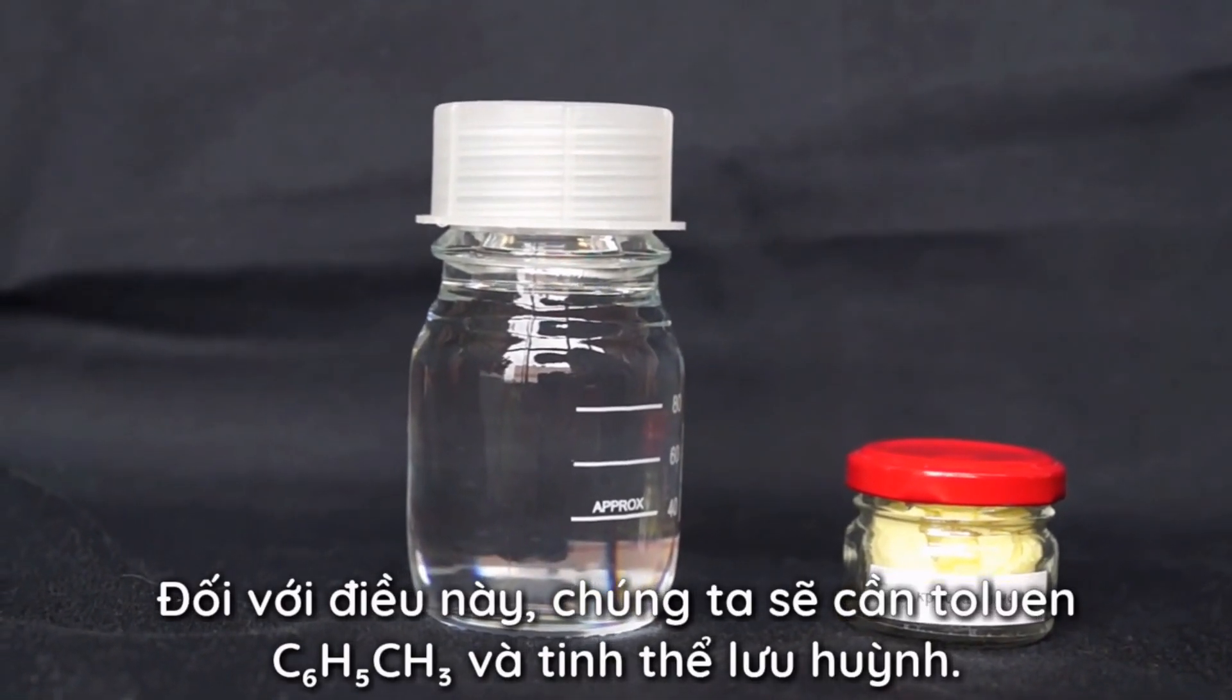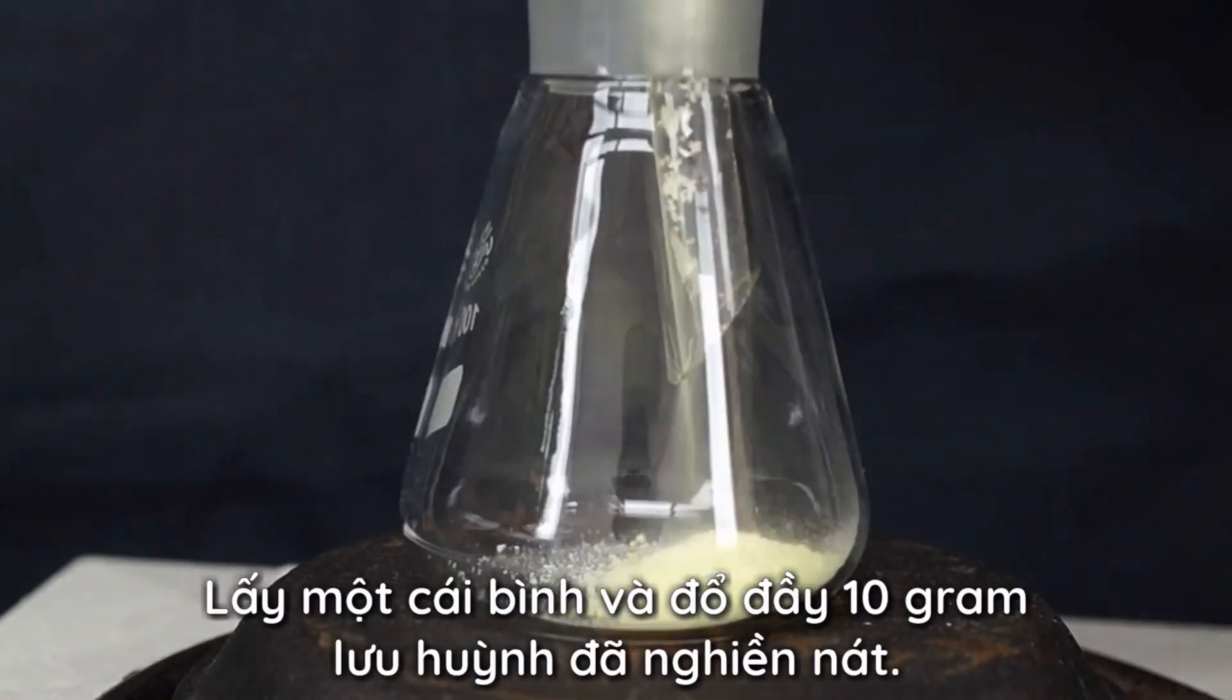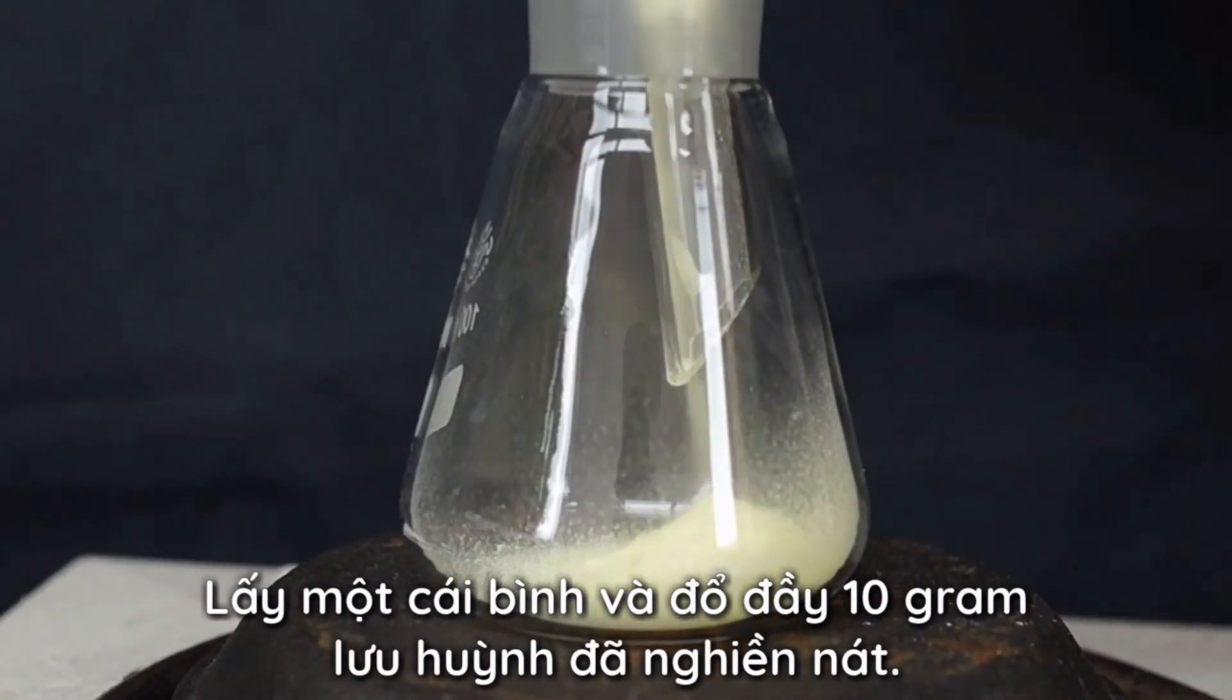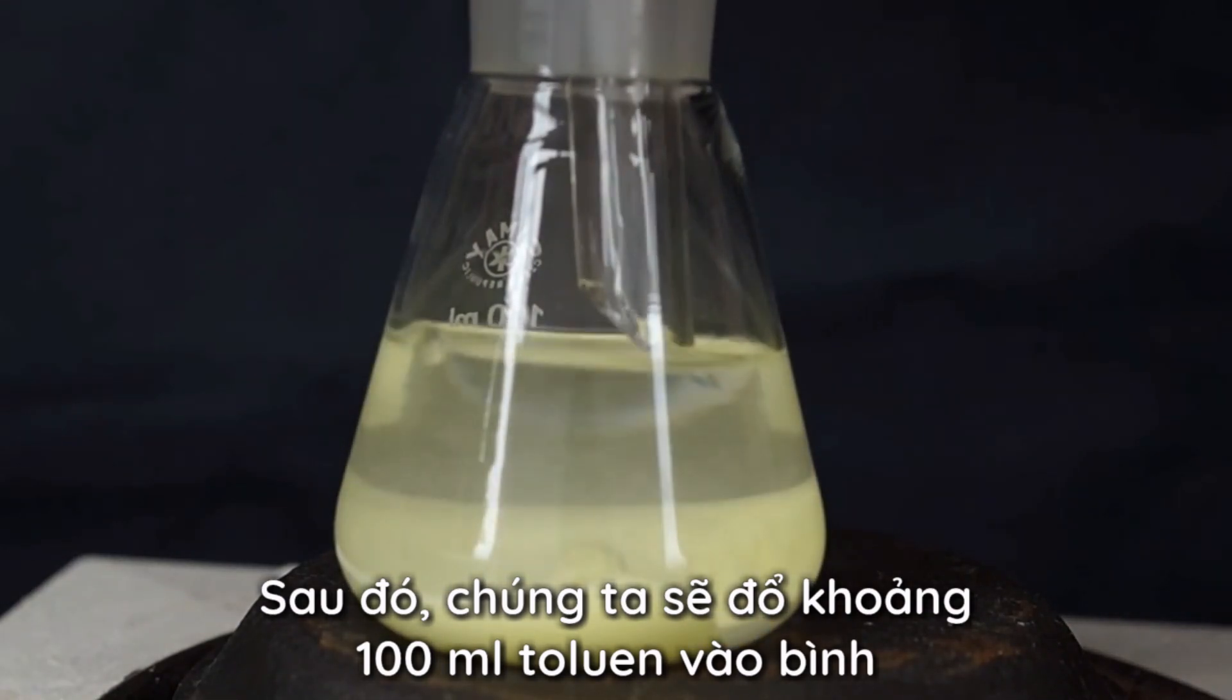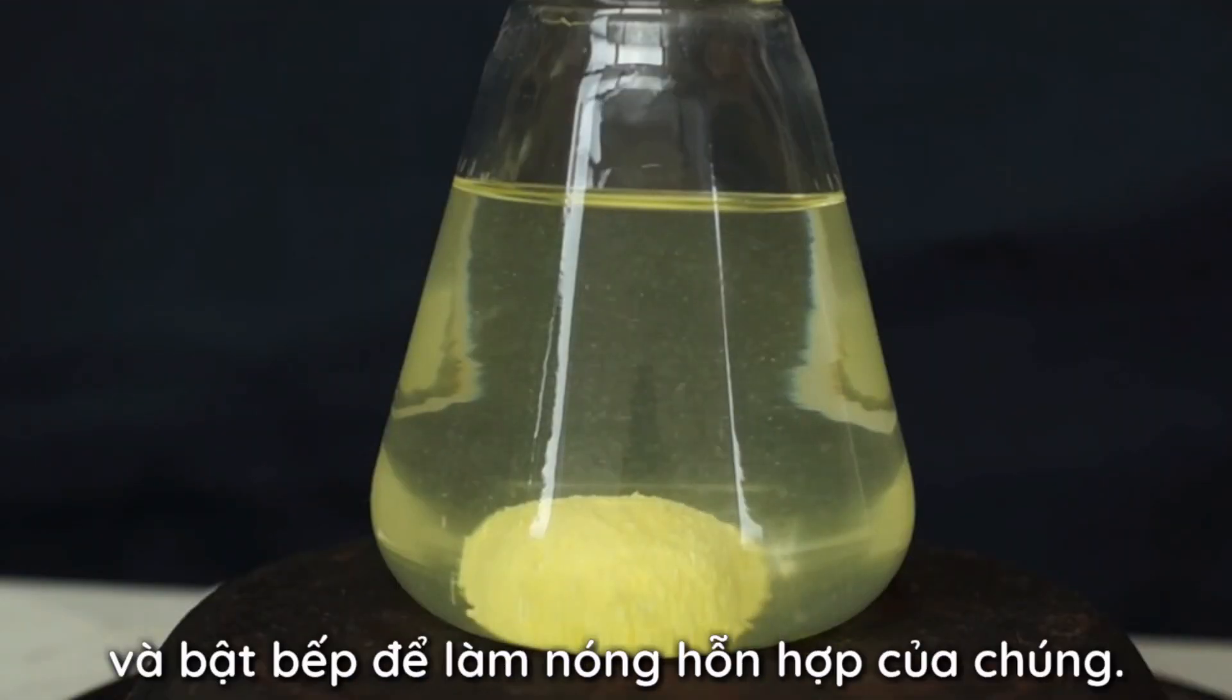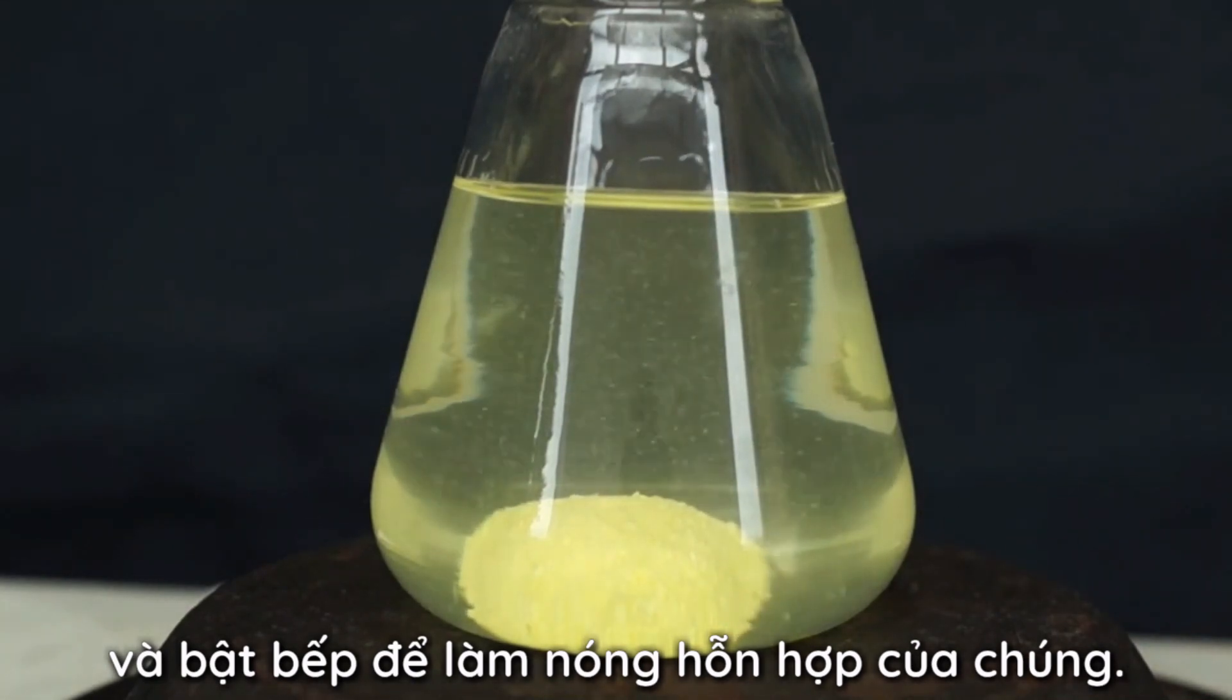For this we will need toluene and crystalline sulfur. Let's take a flask and fill it with 10 grams of crushed sulfur. Then we will need to pour about 100 ml of toluene into the flask and turn the stove on to heat up our mix.